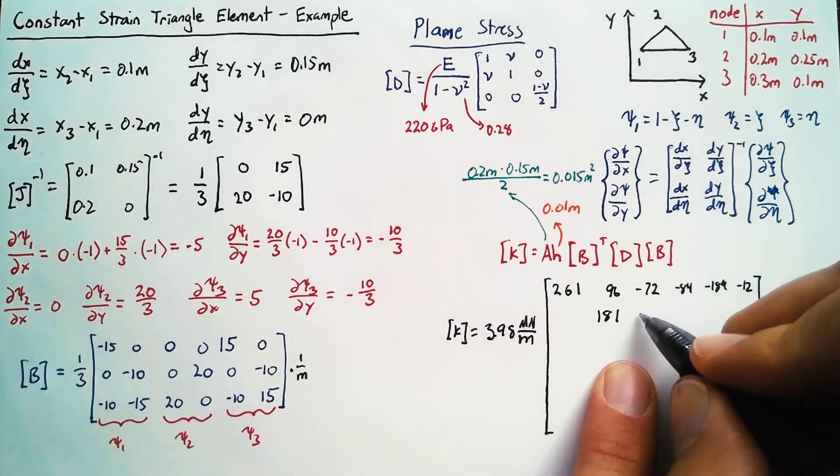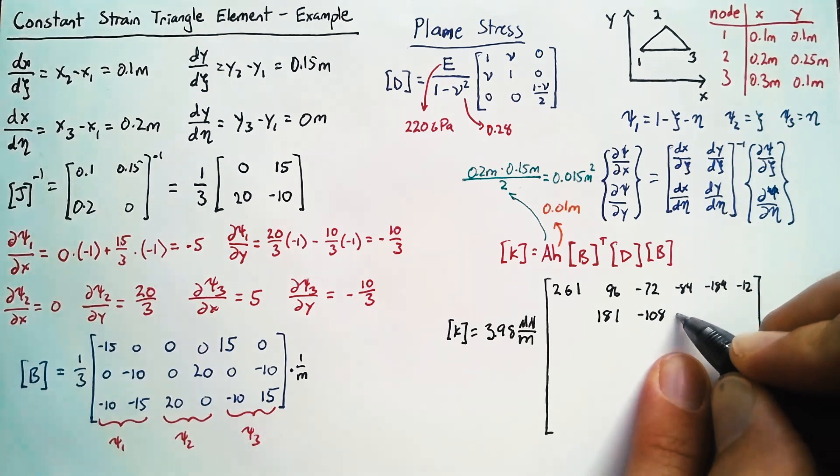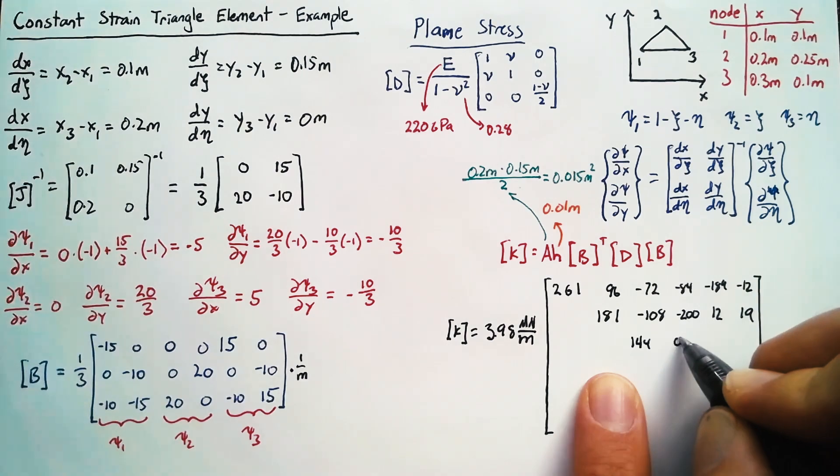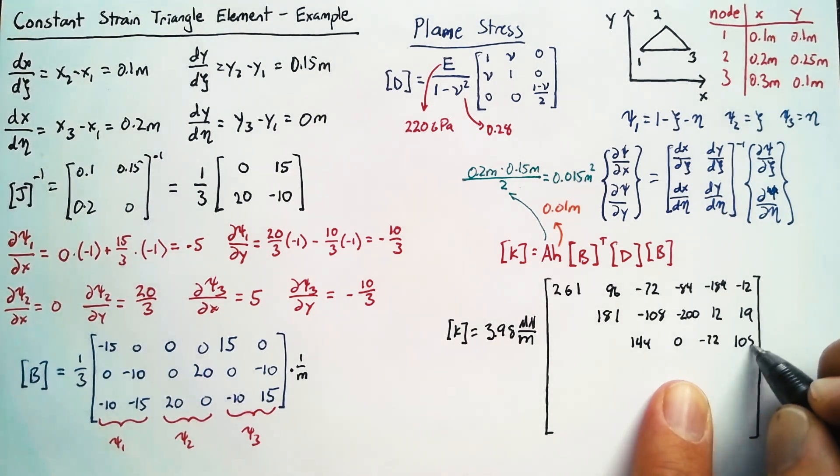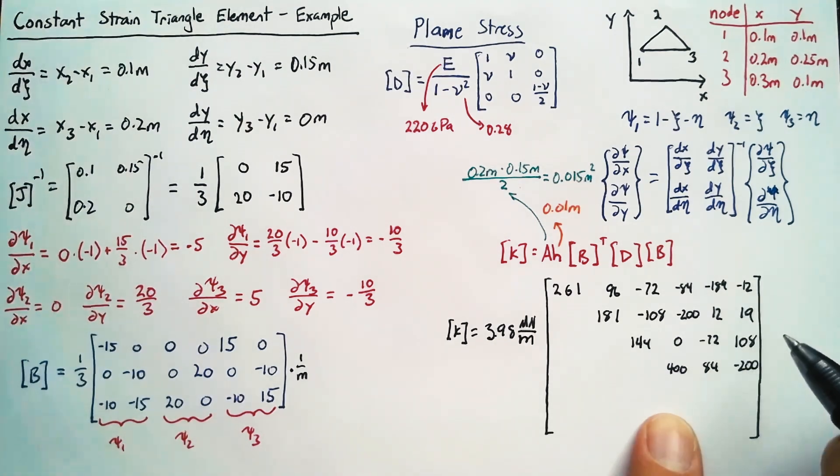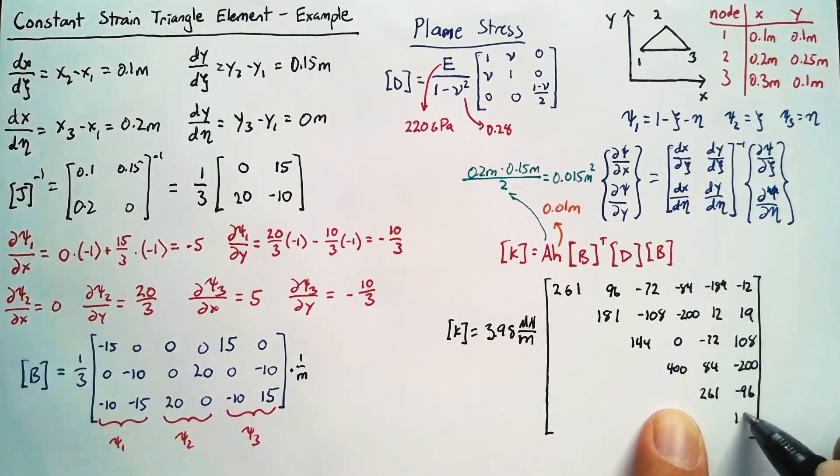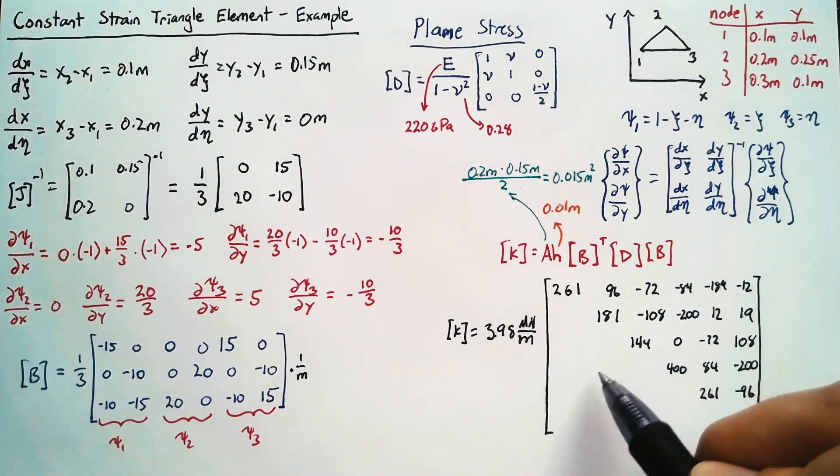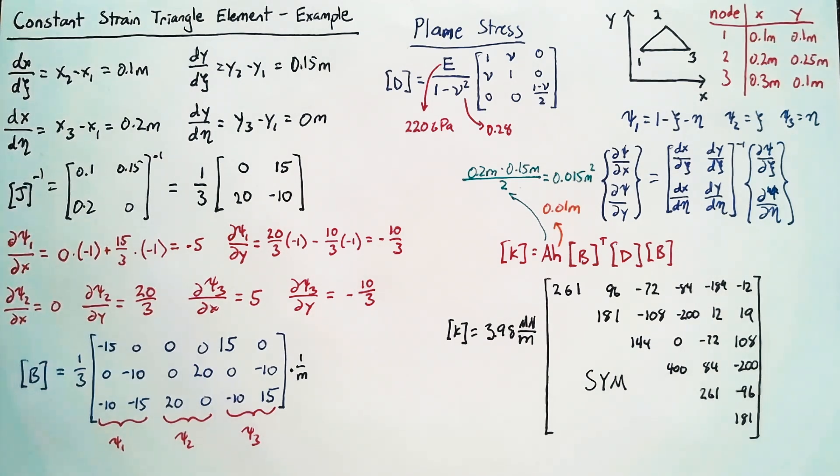Now, when we're writing this, we often skip writing past the diagonal, because these should always be symmetric matrices. And so instead of writing out these additional values, we'll just write sym here for symmetric.